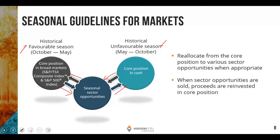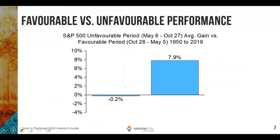It's important to note that even in the unfavorable period, there are equity opportunities on a seasonal basis. In the six-month period of seasonal strength, the S&P 500 has historically produced larger gains and fewer losses than the other six months of the year. Over the long term from 1950 to 2019, the S&P 500 produced an average gain of 7.9 percent in the period from October 28th to May 5th, while it produced an average loss of 0.2 percent during the unfavorable period.